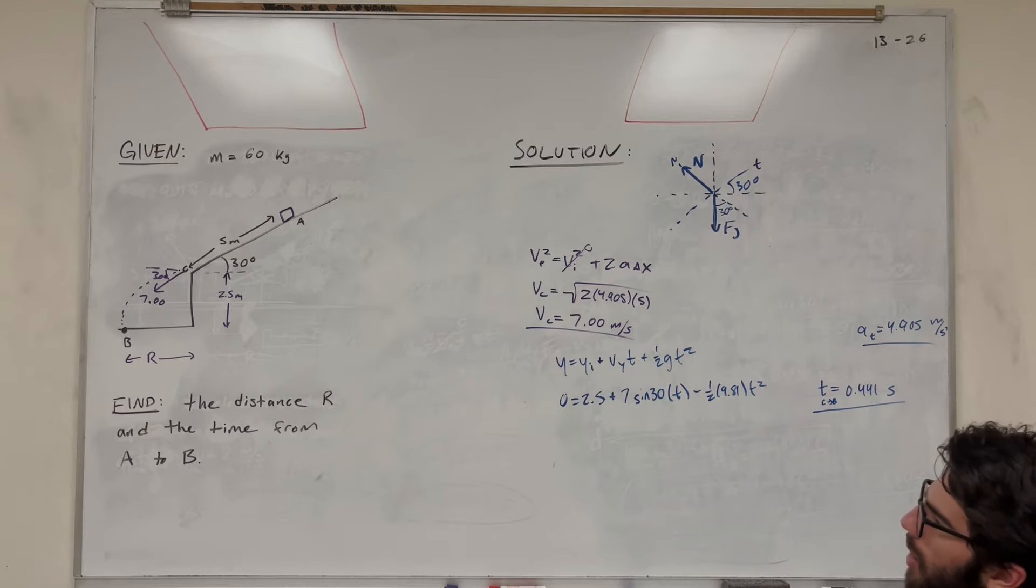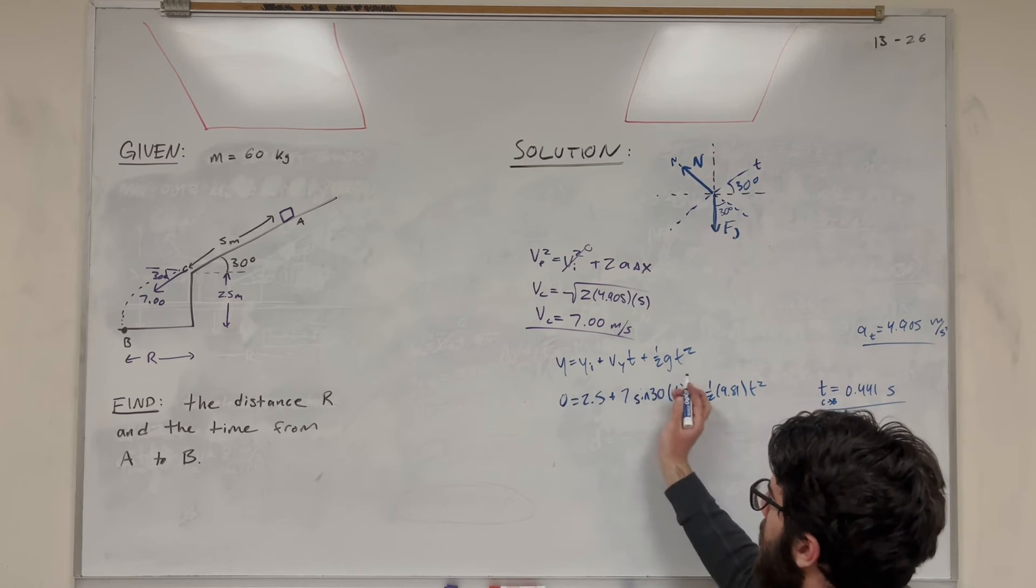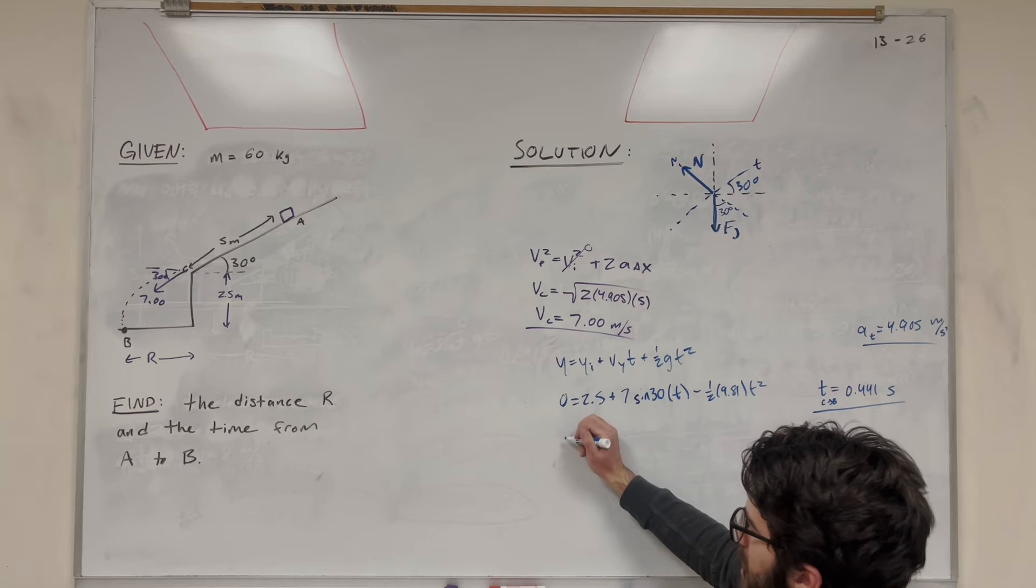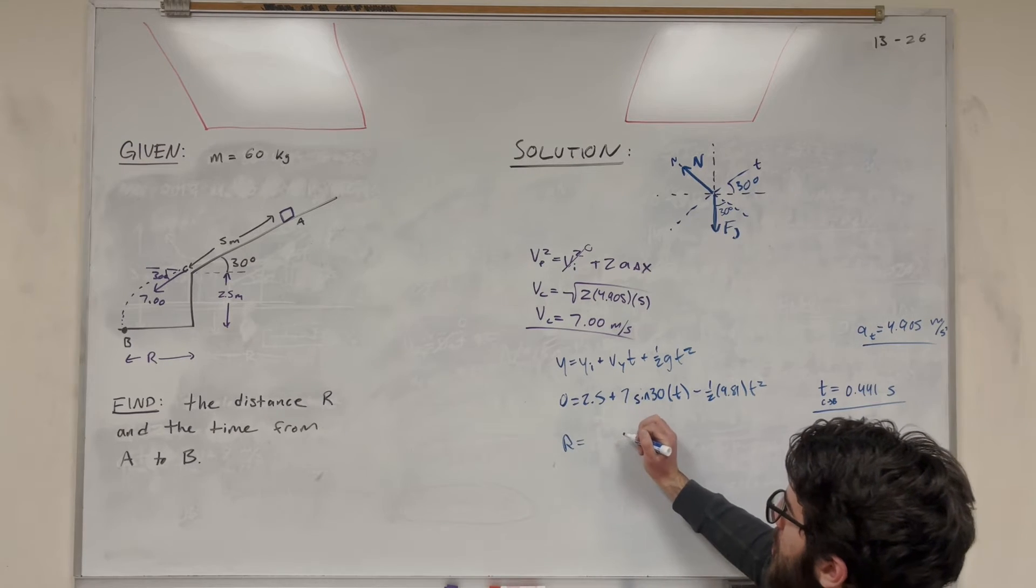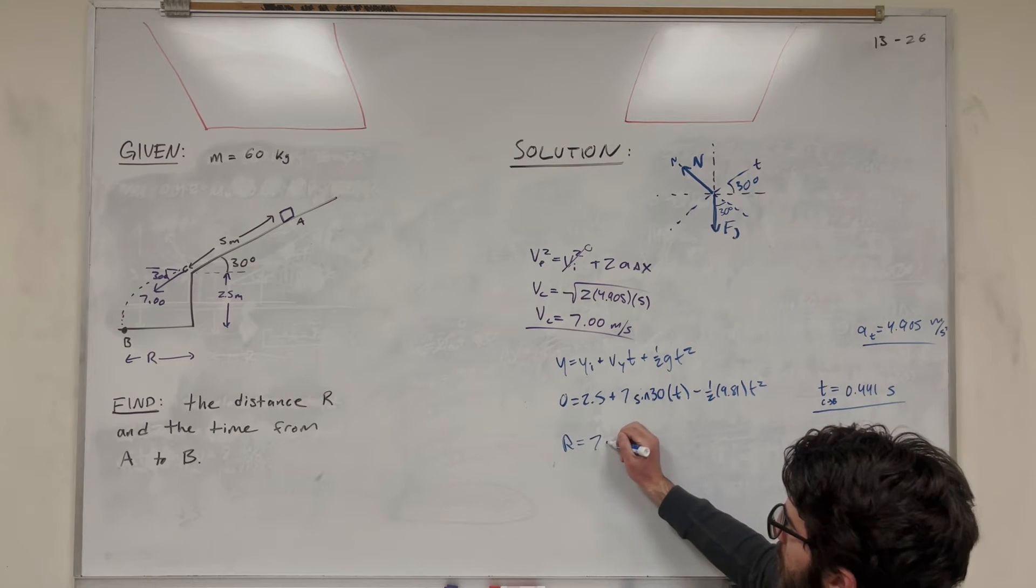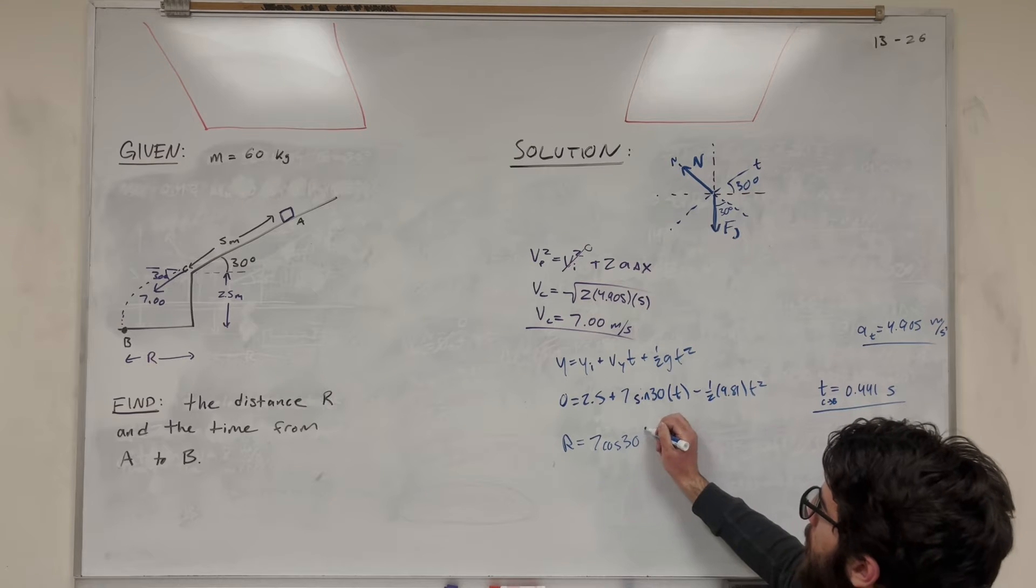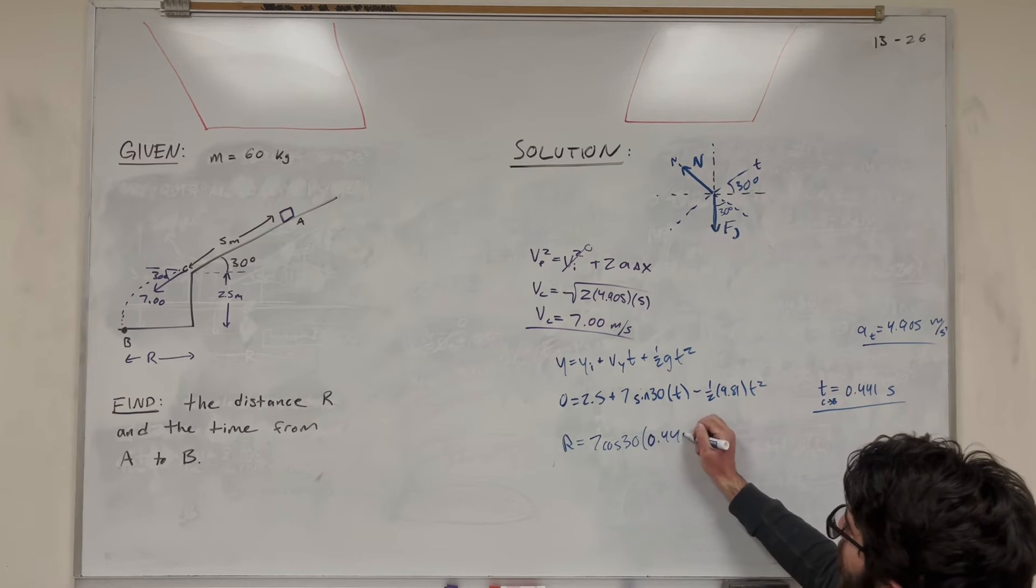Very useful. Now we just need to look in the X direction. So if we look in the X direction, we're using the same equation, but in the X. So basically it's going to be R equals velocity in the X direction, so 7 cosine of 30 this time, times the time. So 0.441.